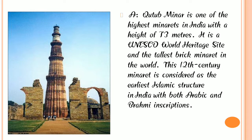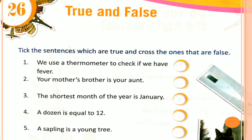Children, in today's lecture we learned about different types of things, and now we are going to do the exercise on these slides. Unit number 26: True and False. Tick the sentences which are true and cross the ones that are false.